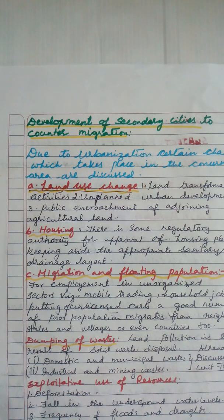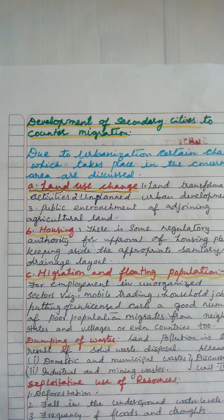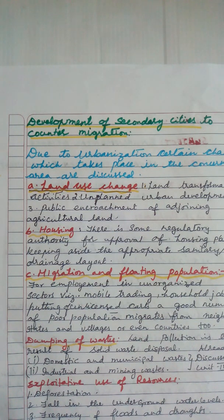Now we are moving to the development of secondary cities to counter migration. Counter migration means returning rural people from cities back to their own rural areas, which you have already learnt.